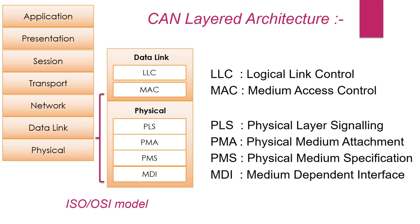The physical layer is responsible for the transmission and reception of raw data. It defines the specification for parameters such as voltage level, timing, data rates, and connector.